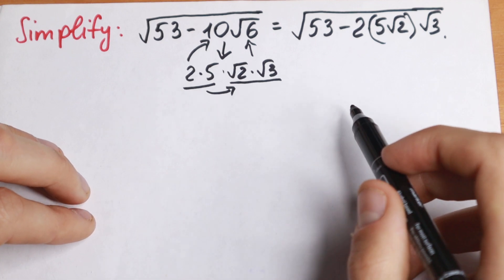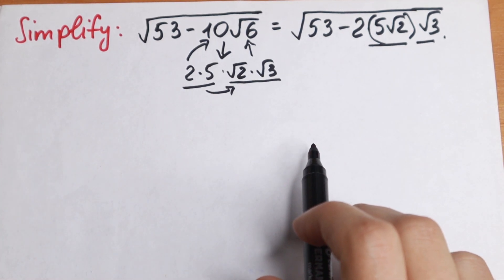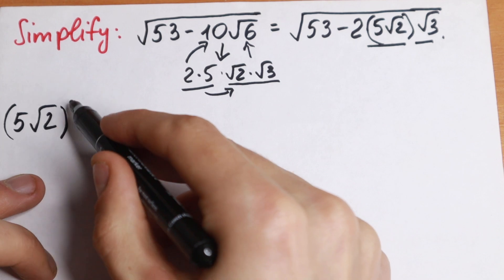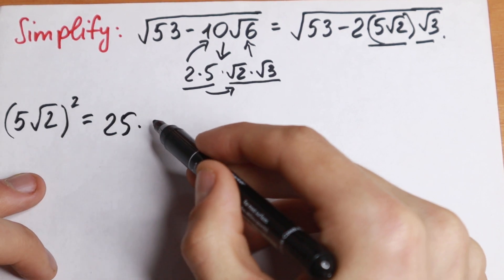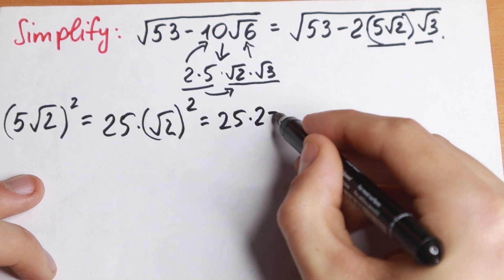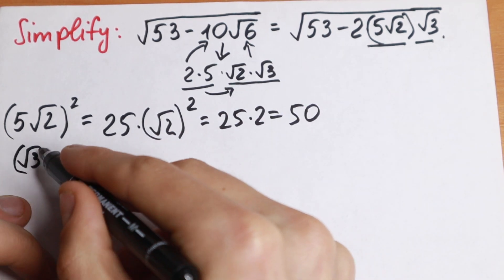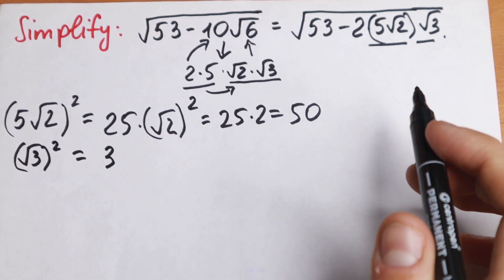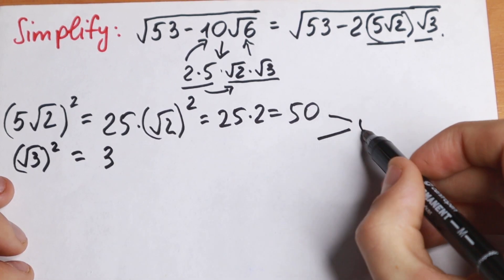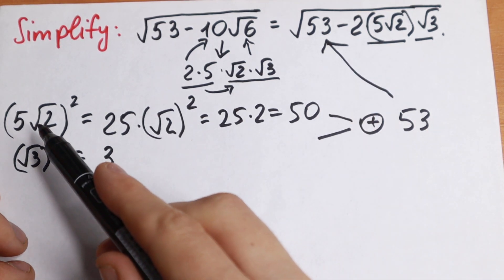What are we going to do next? Take a look. If we raise 5√2 to the second power, we get 25 times 2, which equals 50. And if we raise √3 to the second power, we get 3. Now, if we add both elements — 50 and 3 — we get 53, which is our first number. So 53 can be written as a sum of these two squares.